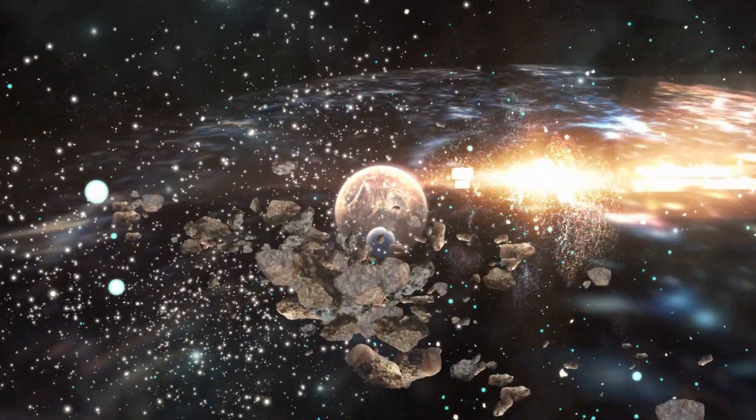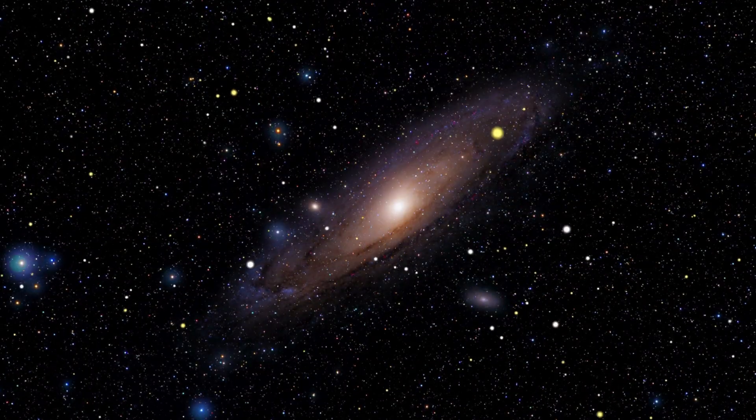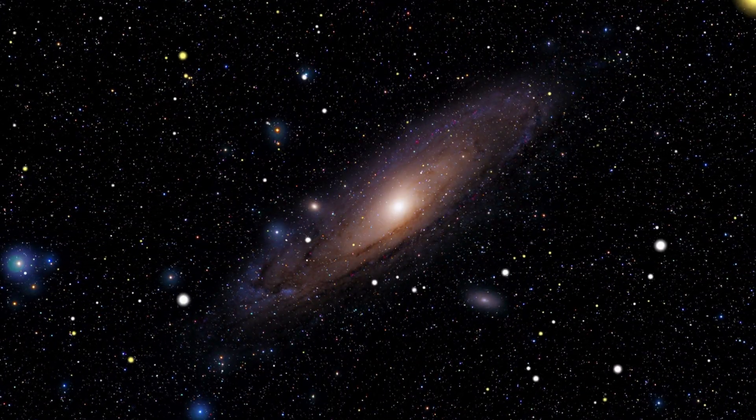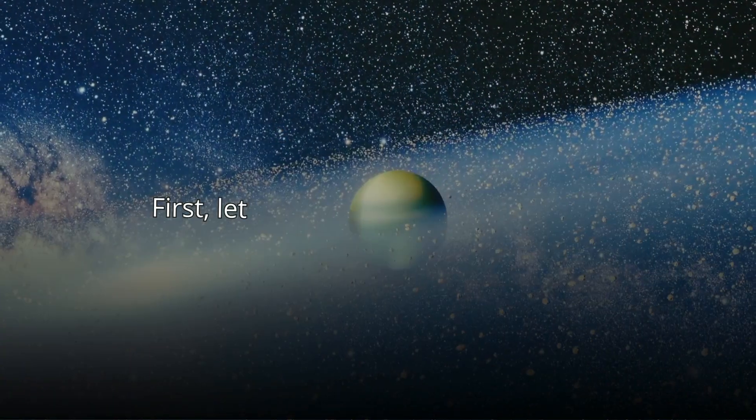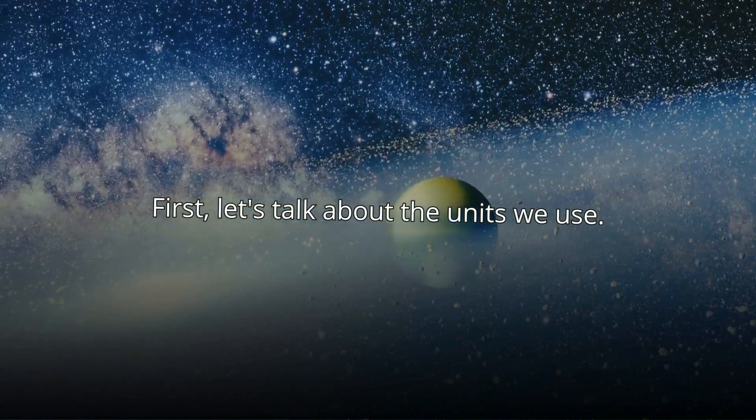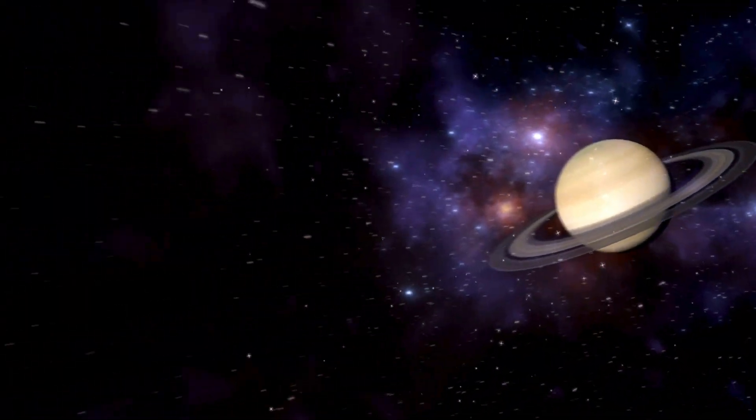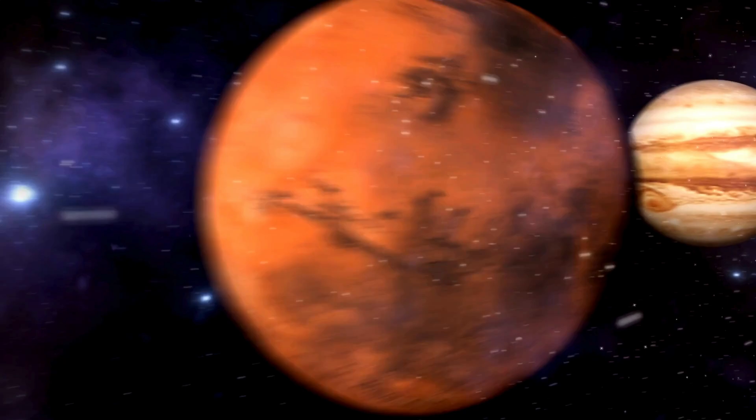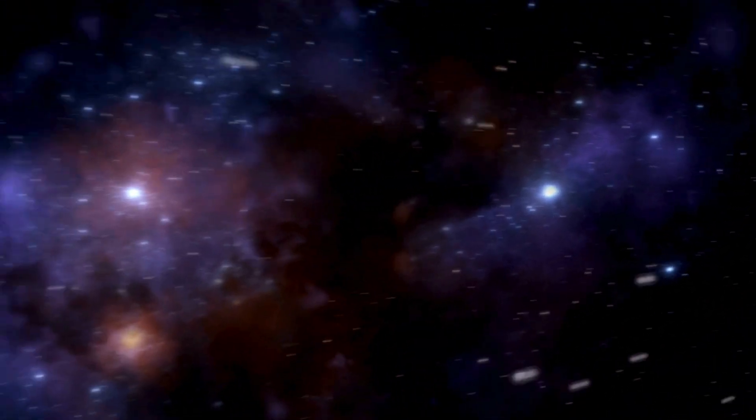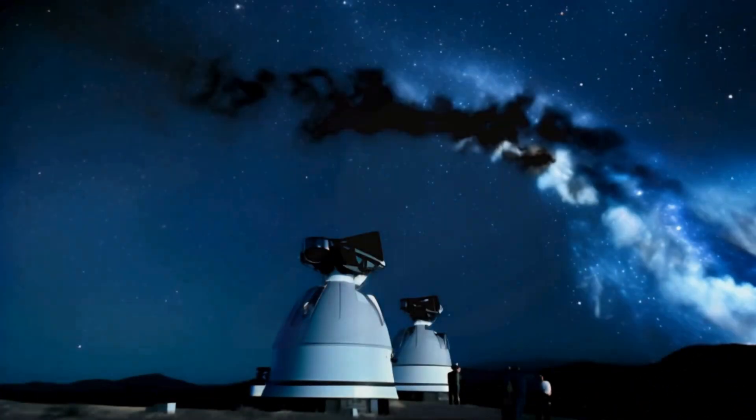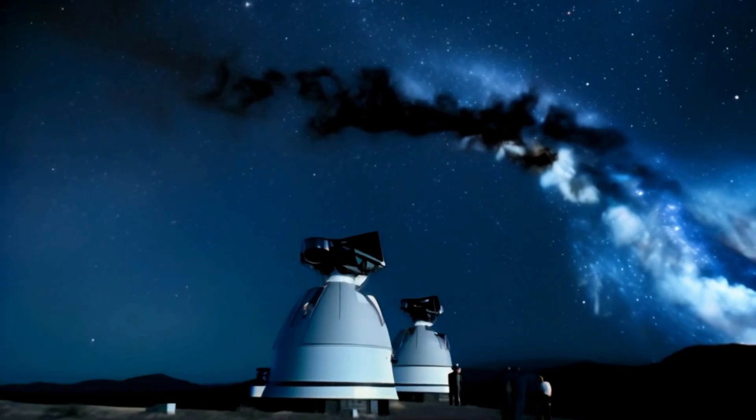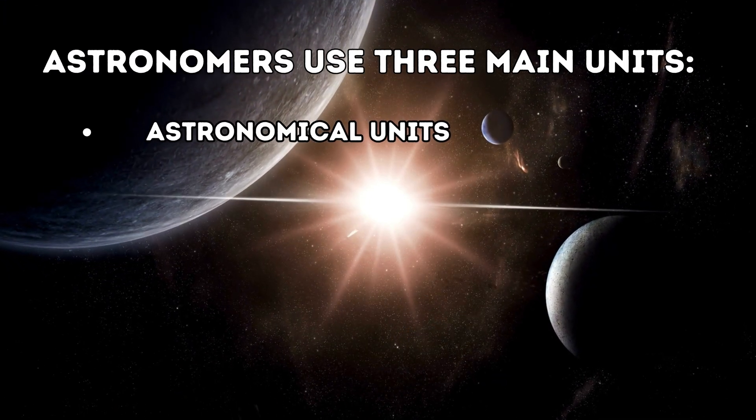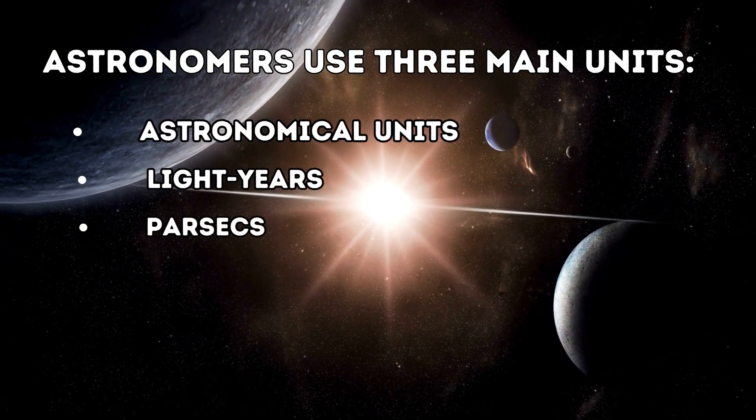Now that we have a basic understanding of the universe, let's explore how we measure the vast distances in space. First, let's talk about the units we use. In space, distances are so enormous that using kilometers or miles would result in huge numbers. Instead, astronomers use three main units: astronomical units, light years, and parsecs.